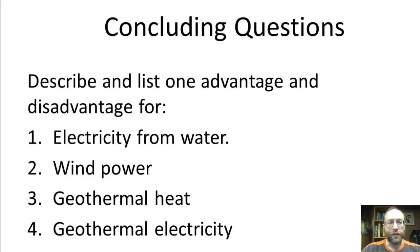Now we come to our concluding questions. For all of these, you have to describe and list one advantage and one disadvantage for: number one, electricity from water; number two, wind power; number three, geothermal heat; and number four, geothermal electricity. That concludes this vodcast — I'll see you in class tomorrow.